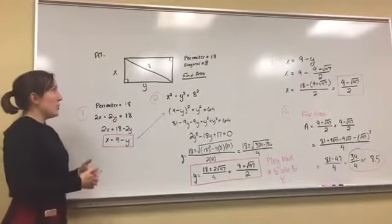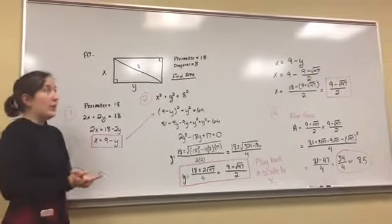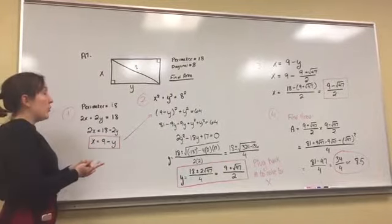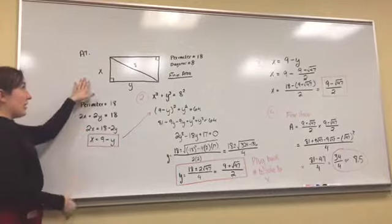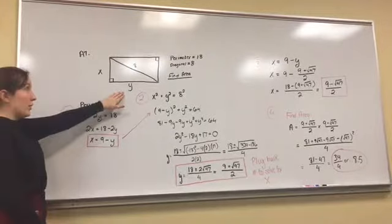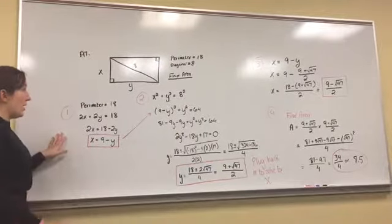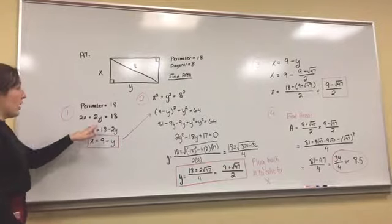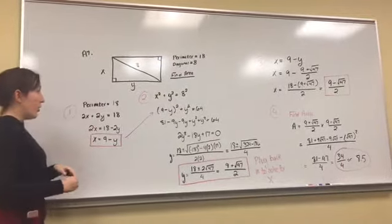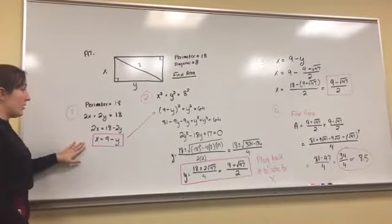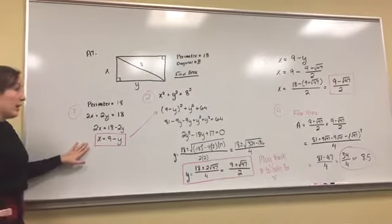The first thing I noticed is you can set up two equations from it. You have the perimeter, so you can figure out the perimeter equation. I set my width equal to x and my length equal to y, so that's where those variables came from. 2x plus 2y is obviously going to equal 18 because that's the perimeter. I solved for x and I got a really nice 9 minus y for x.